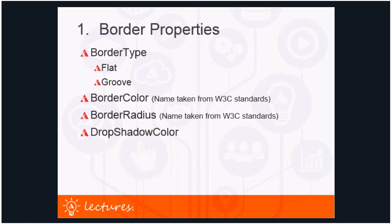The border color name is taken from the W3C standards, as is border radius. When you have specified border type as flat, you can set the color of the border with border color. Border radius allows you to give the border round corners by specifying the number of pixels for the radius. The drop shadow color: when you specify a drop shadow color, your frame will be displayed with a shadow effect in the specified color.